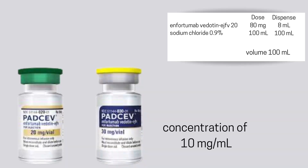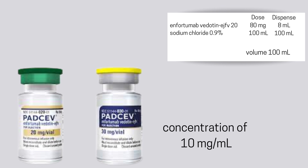So if I take my dose of 80 milligrams and divide by 10 milligrams per ml, that gives me 8 ml. I'm going to use two of the 30 milligram vials and one of the 20 milligram vial, and that will give me my 8 mls.